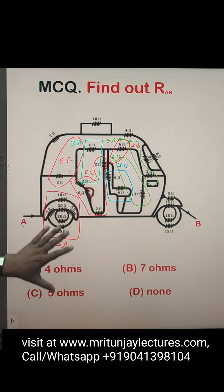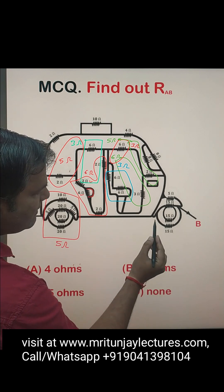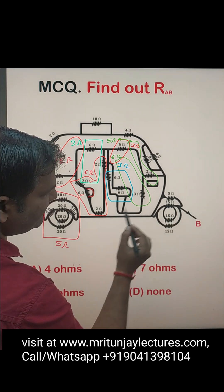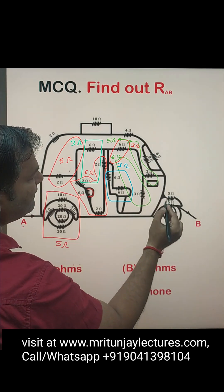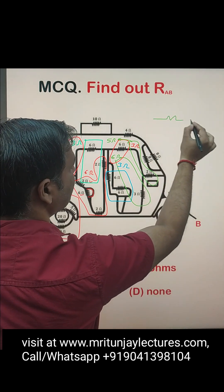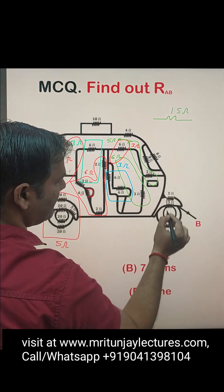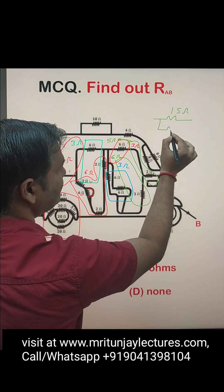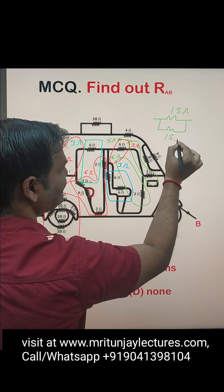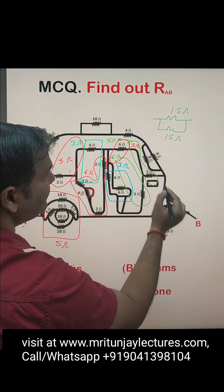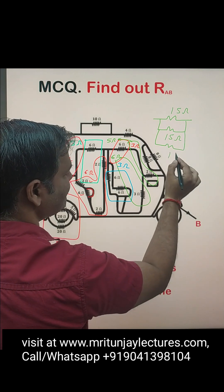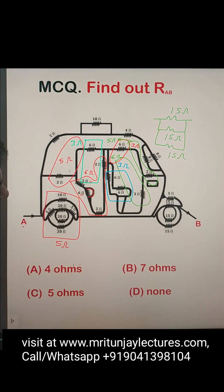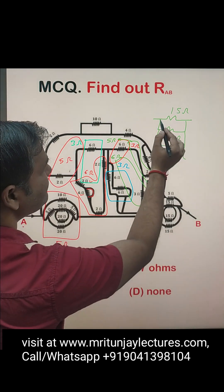The combination of that section is 5Ω, and that section also gives 5Ω. Now look here: 15Ω and 15Ω — redrawing, we have 15Ω, 15Ω, and 15Ω in parallel, and that also gives 15Ω. And that one is 5Ω.